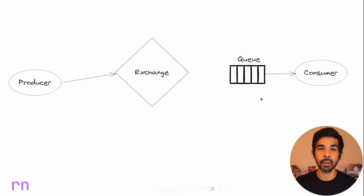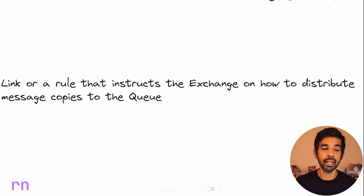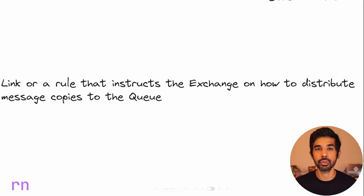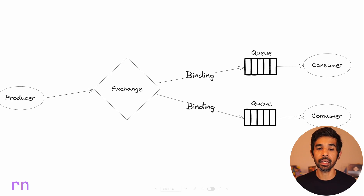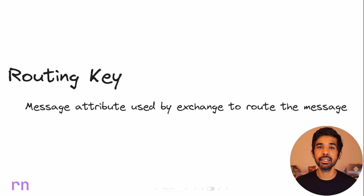The exchange sends copies of these messages to the different queues registered with it. With the exchange in between the producer and the consumer, we need to introduce two more concepts: bindings and routing keys. A binding is what connects an exchange with a queue — think of it as a link or rule that instructs the exchange on how to distribute message copies to the different queues. You can have one or more bindings on an exchange pointing to the same queue or different queues. A routing key is a message attribute used by the exchange to route messages, and this depends on the exchange type.